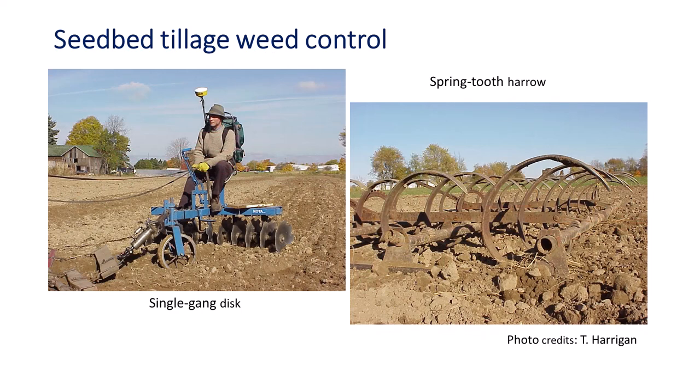The single-gang disc is an aggressive tool that cuts, mixes, and levels the soil surface. The aggressive action of the discs makes it suitable for weeds, even weeds as tall as 40 or 50 centimeters. A disc can incorporate maize stubble, terminate a cover crop, or run shallow with a reduced gang angle just before planting to kill small weeds.